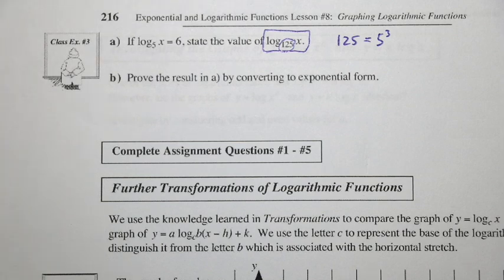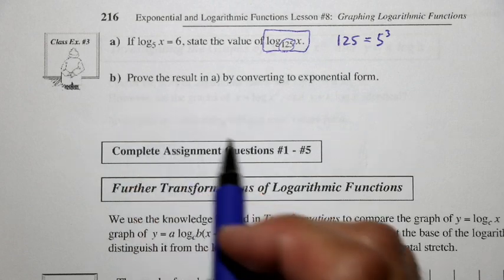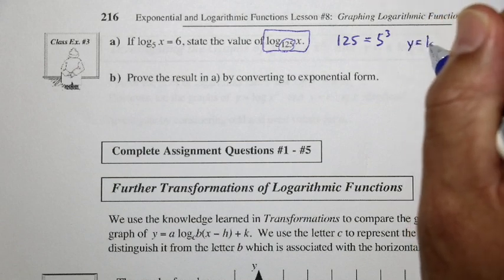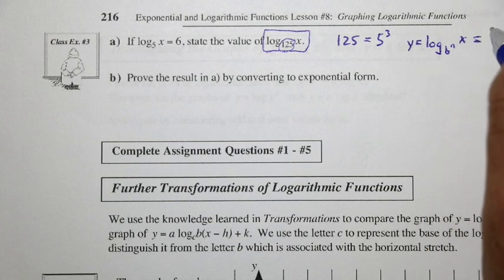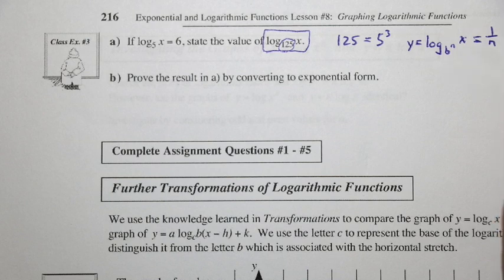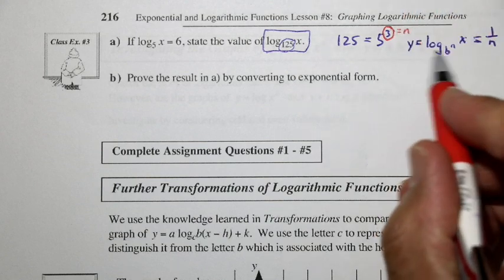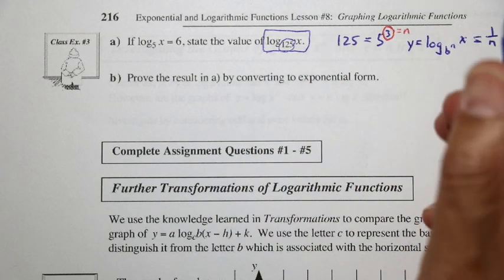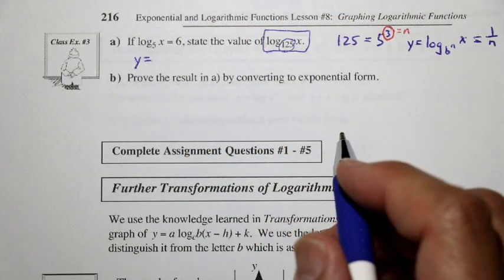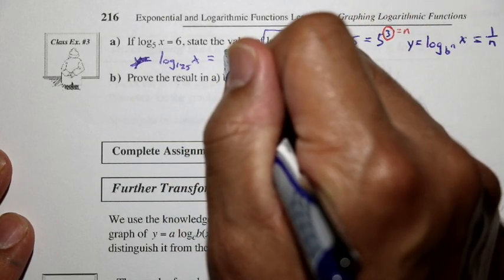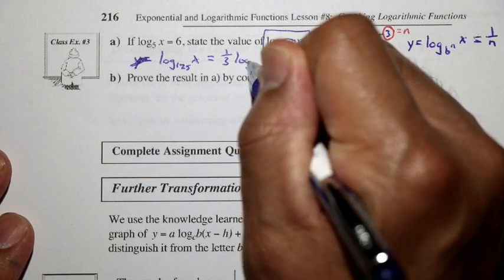Using our rules of logarithms — and there are a lot of rules to remember — we can think of it like this: if we have y equal to log base b^n of x, that's going to equal 1 over n times log base b of x. So you have this vertical stretch of 1 over n. Here we've noticed that when we write 125 as base 5, we have an exponent of 3, which is our n value. So following this format, log base 125 of x equals 1 over 3 times log base 5 of x.